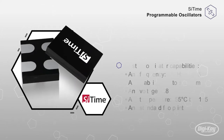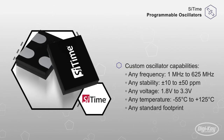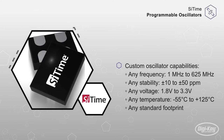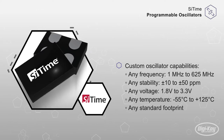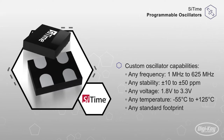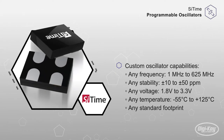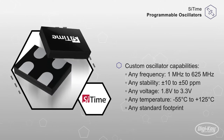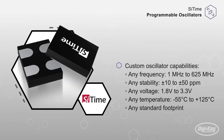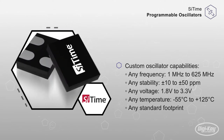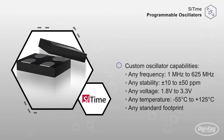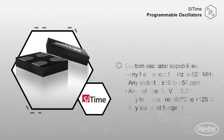Custom oscillator capabilities include any frequency from 1 to 625 MHz, any stability from ±10 to ±50, any voltage from 1.8 to 3.3 volts, any temperature from –55 to 125 degrees Celsius, and in any standard footprint.